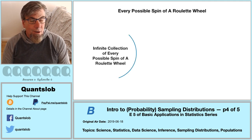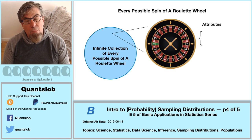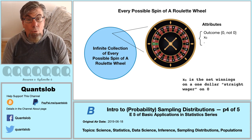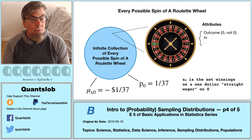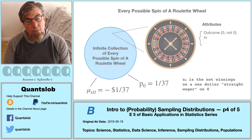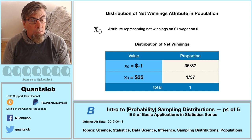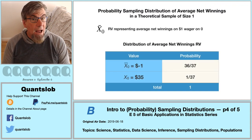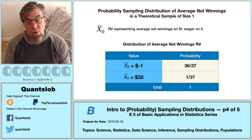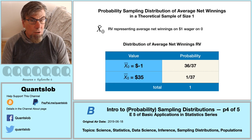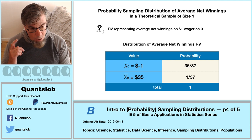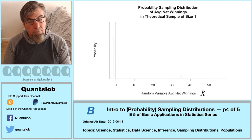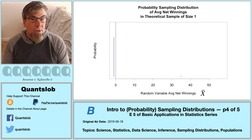For this edition, we're going to look at another example: the infinite imaginary population of every possible spin and ball landing of a European roulette wheel. We're focused on two related attributes — whether or not the ball lands on green zero, and the net winnings on a $1 straight wager on green zero. Here is the distribution in table form of the net winnings attribute in our population. We're going to create a sample statistic — the average net winnings. Here's the distribution of our average winnings in a theoretical random sample of size 1: the probability of losing a dollar is 36 over 37, and the probability of pocketing $35 is 1 over 37.